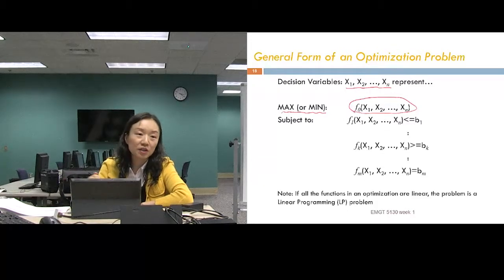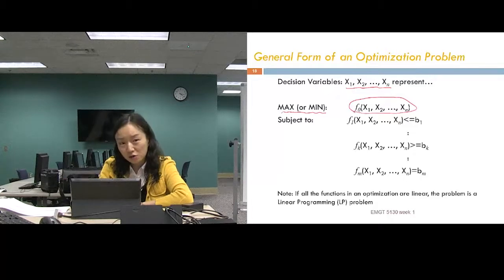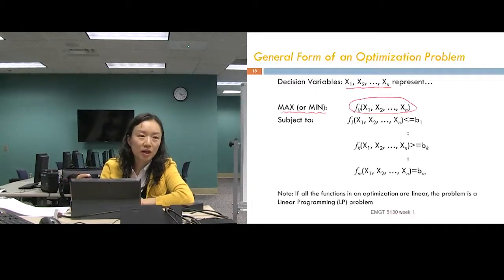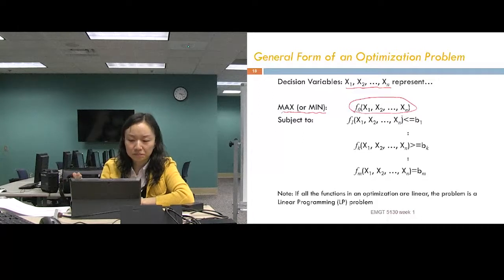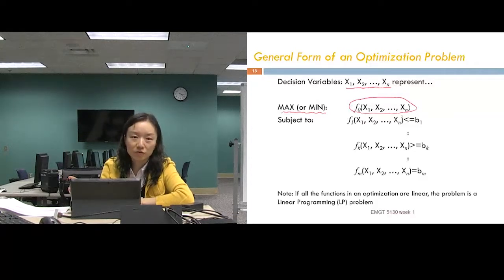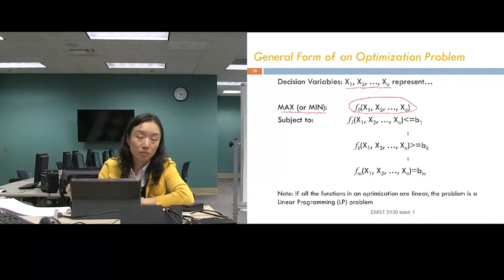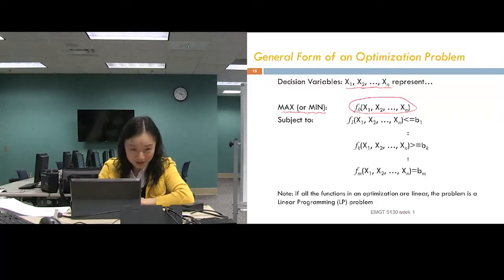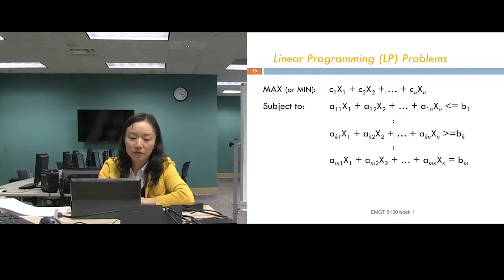We want to differentiate LP models from ILP and nonlinear programming because the algorithms used to solve them are different. Linear programming models are guaranteed to find the optimal solution, but nonlinear programming models may not find the absolute optimal. Whenever possible, we model problems as linear or linear integer programming models.